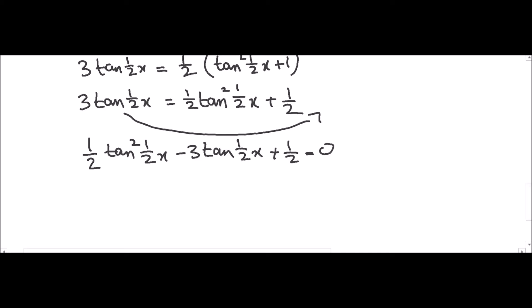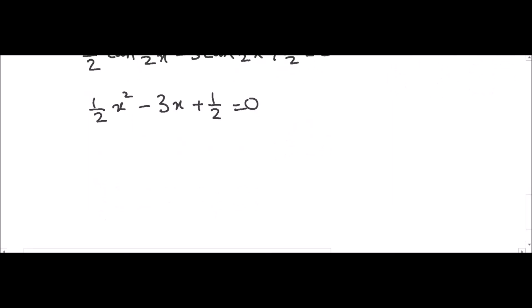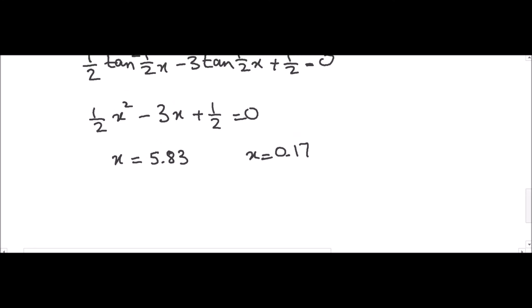This is a quadratic equation we can solve by letting t = tan(½x), giving ½t² minus 3t plus ½ equals zero. Solving this, our solutions are t equals 5.83 and t equals 0.17. Since t = tan(½x), we have tan(½x) equals 5.83 and tan(½x) equals 0.17.